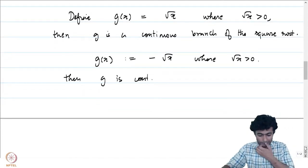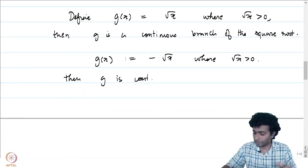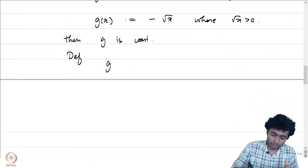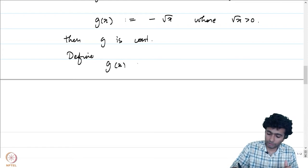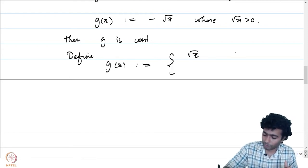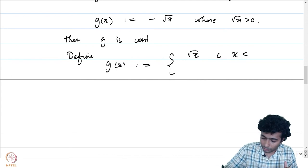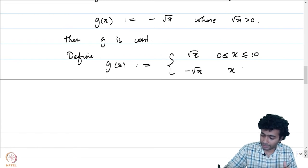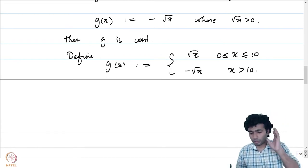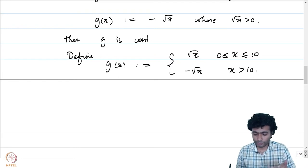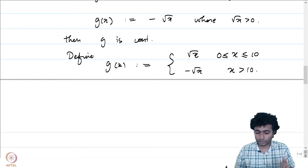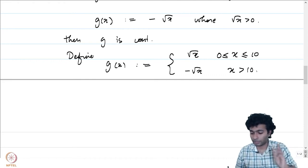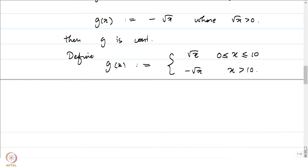We could also pick branches of the square root which are not continuous. For example, define g(x) to be the positive square root for 0 ≤ x ≤ 10 and the negative square root for x > 10. This is also a branch since g(x)² = x, but it is not continuous because at x = 10 there is a discontinuity.